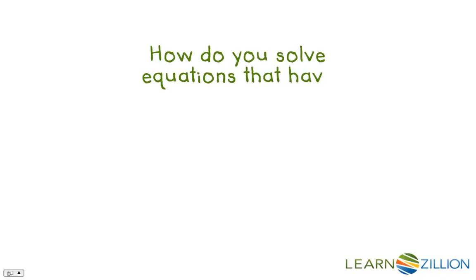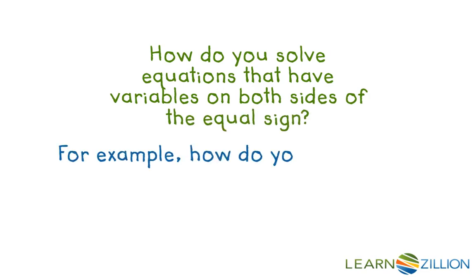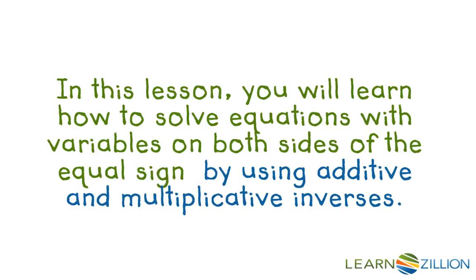How do you solve equations that have variables on both sides of the equals sign? For example, how do you solve for x in the equation 3x minus 15 is equal to 7x minus 8? In this lesson, you will learn how to solve equations with variables on both sides of the equals sign by using additive and multiplicative inverses.